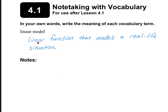A linear model is a linear function that models a real-life situation. In the linear function, we would of course use y equals mx plus b, and m in this case, if it's a real-life situation, will be the rate of change. The rate of change might be something like the cost per megabyte, miles per hour, cost per pound, or how something grows — centimeters per day. All of these things would be the rate of change.